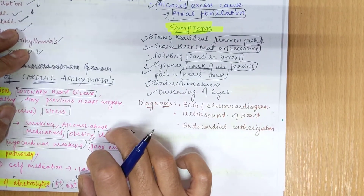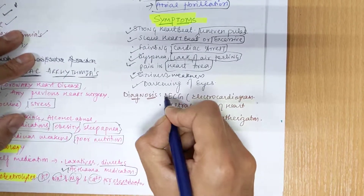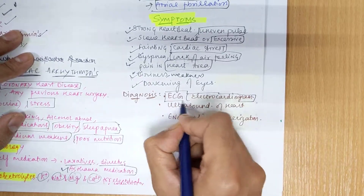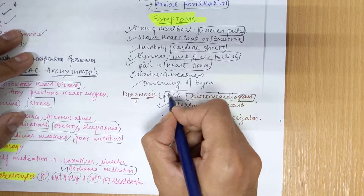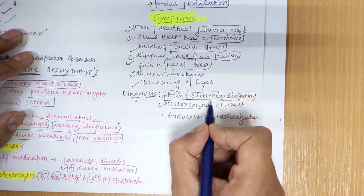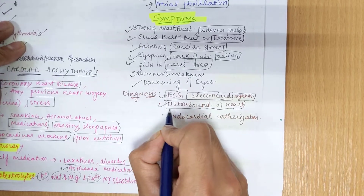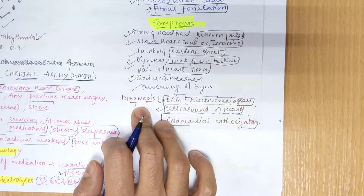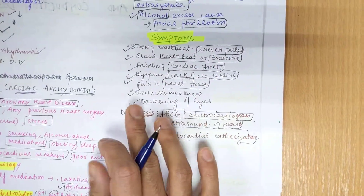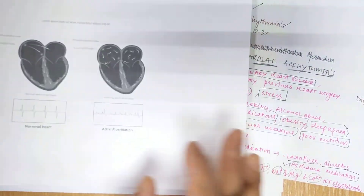For diagnosis, to confirm a patient has arrhythmia, first you will perform an ECG to see all the waves of the heart impulse. Then an ultrasound can be done to check the anatomy of the heart for any abnormality. Endocardial catheterization can also be performed for further histological analysis or biopsy.